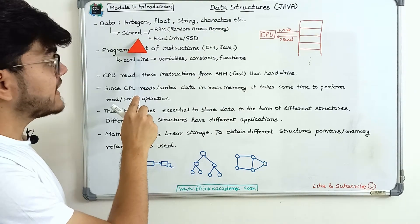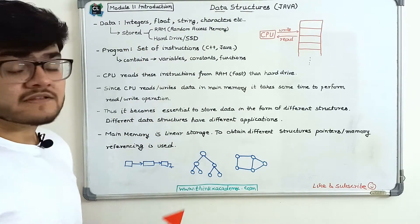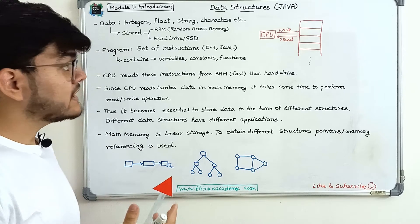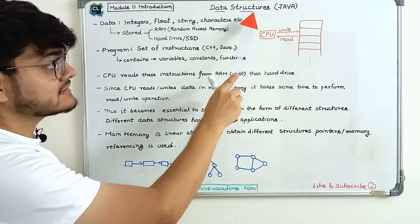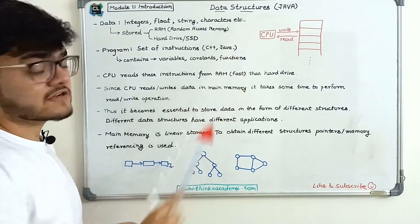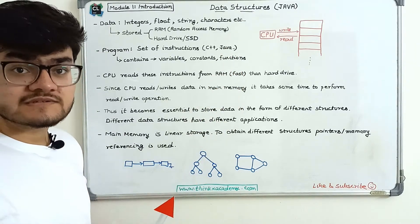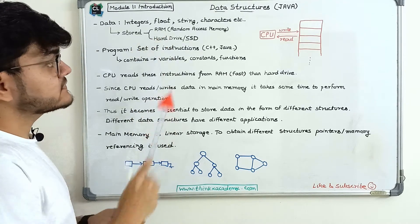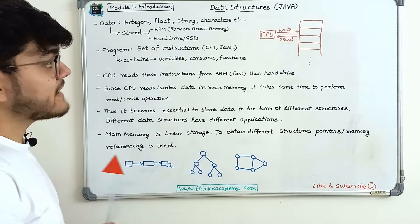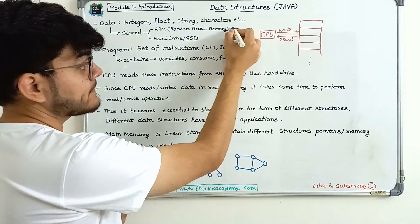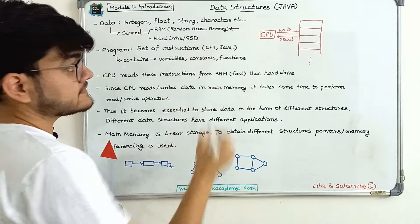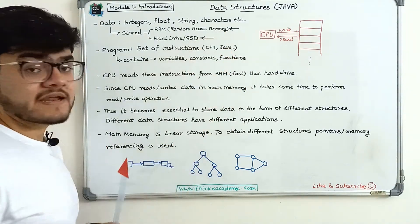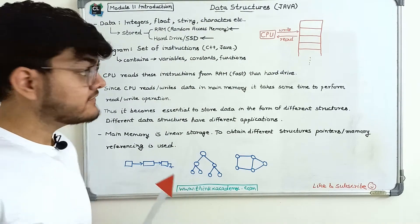Now we need to understand where this data is stored, and by understanding that, we can also understand why data has these structures and why we need them. Data is stored in two ways: the first is the random access memory (RAM), and the second way is to store data in hard drives or solid state drives.